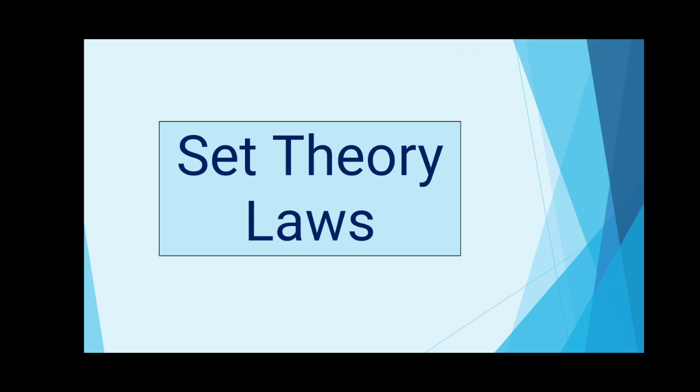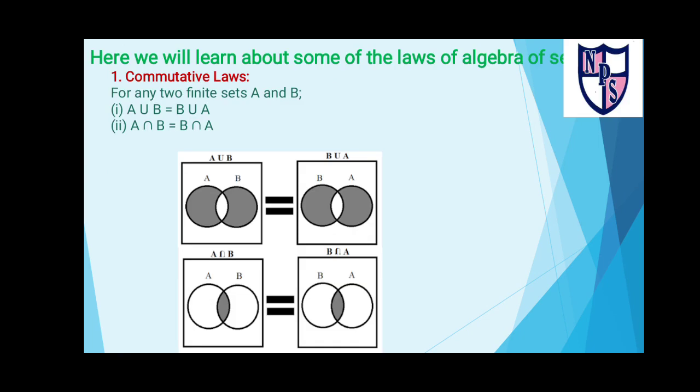Let's move to our new topic related to sets which is set theory laws. First law is the commutative law. Commutative law defines for union and intersection that the order of the sets in which we do the operation does not change the result. Means A union B equals B union A, and A intersection B equals B intersection A.